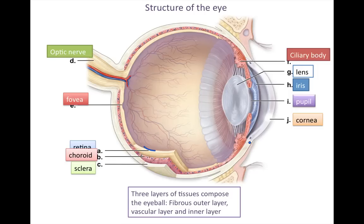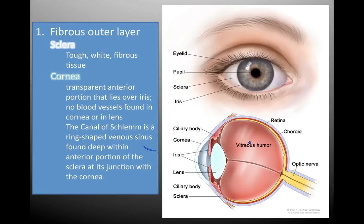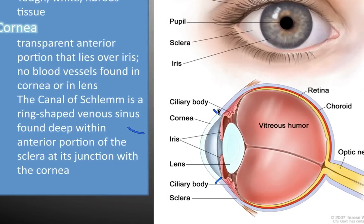Altogether, we have three layers of tissues composing the eye: a fibrous outer layer, a vascular layer, and an inner layer. Looking from the outside in, we have the sclera on the outside, which wraps all the way around the eyeball. The cornea is the transparent anterior portion situated in a circle, and the outside of it is all sclera.